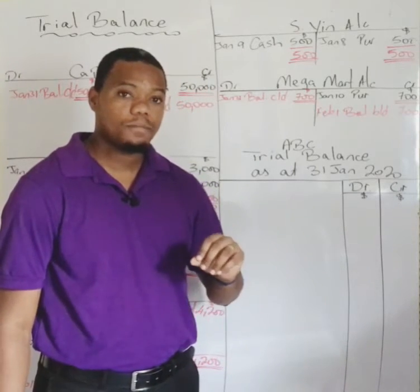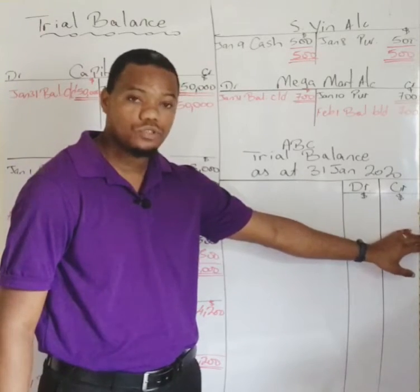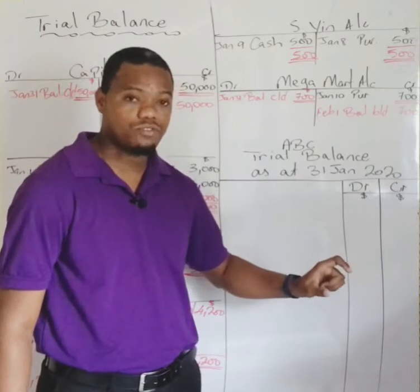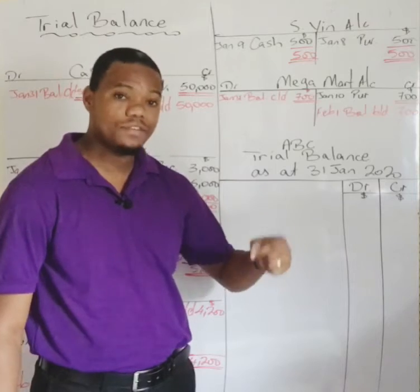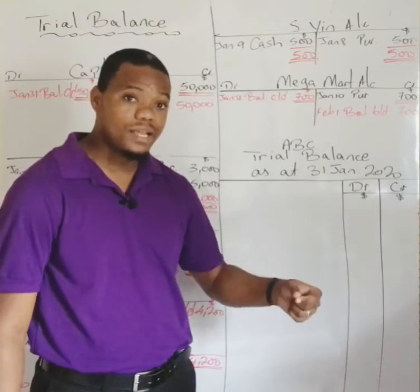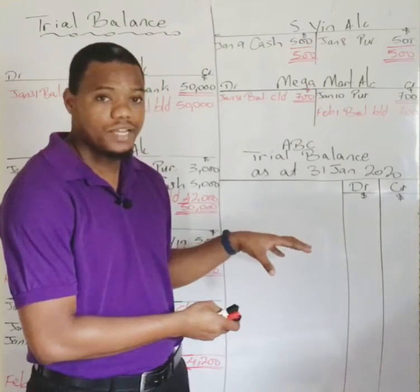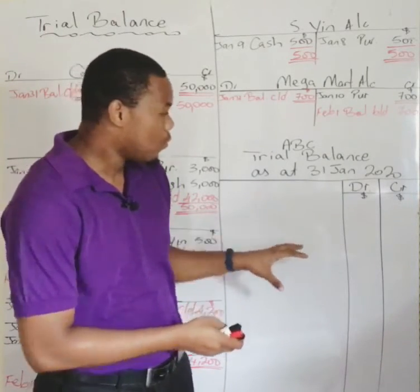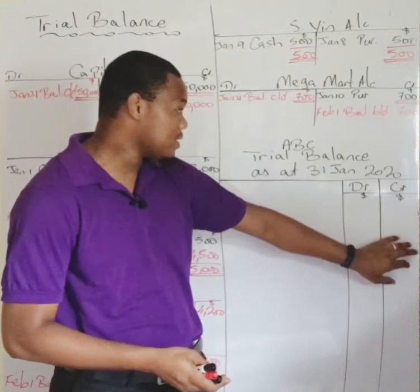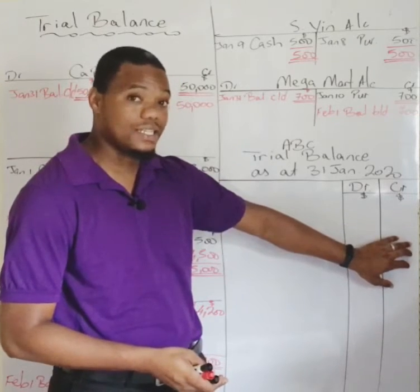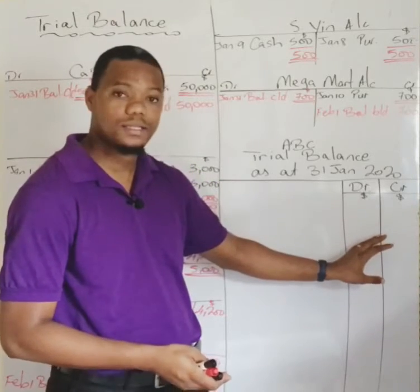In CSEC exams, they normally give a trial balance with the sides mixed up and ask you to sort it out, so knowing which accounts normally have debit or credit balances is really helpful. You can quickly spot errors — for example, if you see the cash account on the credit side of a trial balance, that is incorrect because the cash account must always have a debit balance.